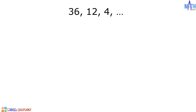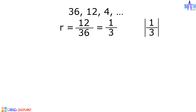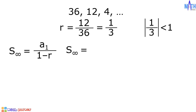Let us find the sum of the terms of the infinite geometric sequence 36, 12, 4, and so on. Let us find the common ratio by dividing any term by its preceding term: 12 divided by 36 is equal to 1 third. The absolute value of 1 third is less than 1, so we can find the sum. Let us use the formula.